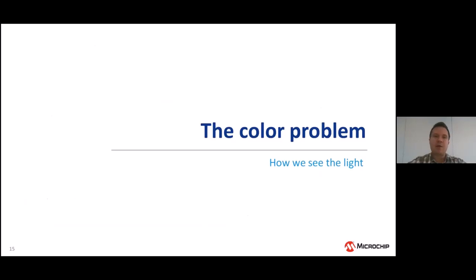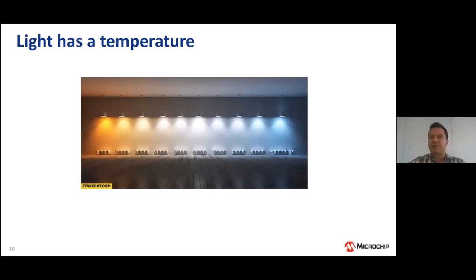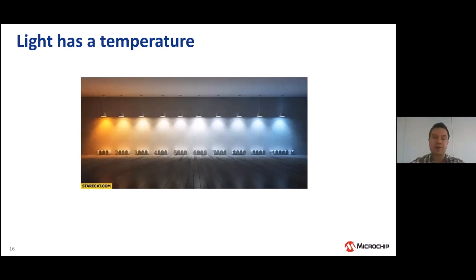Now let me explain another issue that can happen during image acquisition and processing: what I call the color problem. This is closely related to how we see light. Normally we see light as a single entity, but in fact light has a temperature. This temperature affects the way we see light and the way the sensor sees light. In this photo, we can see that light on the left side is more orange and yellowish — a color temperature of 1000 Kelvin — while the light on the right side is more bluish, at 10,000 Kelvin.